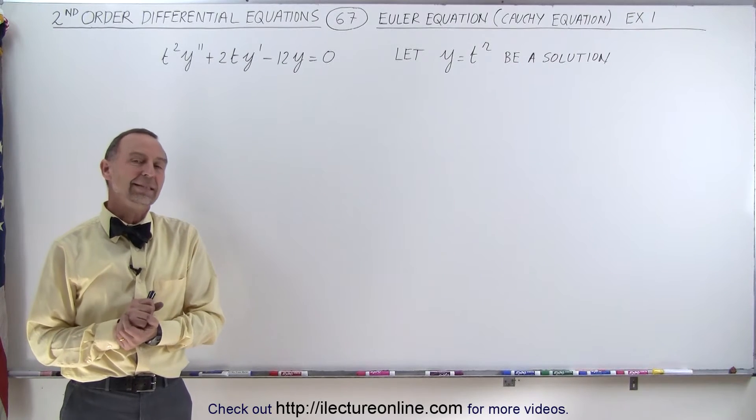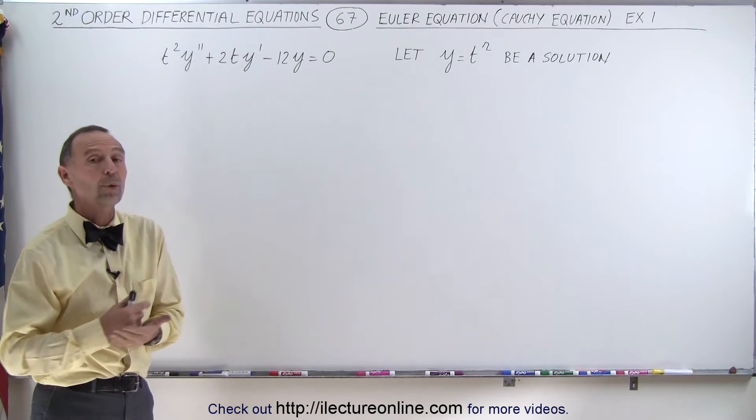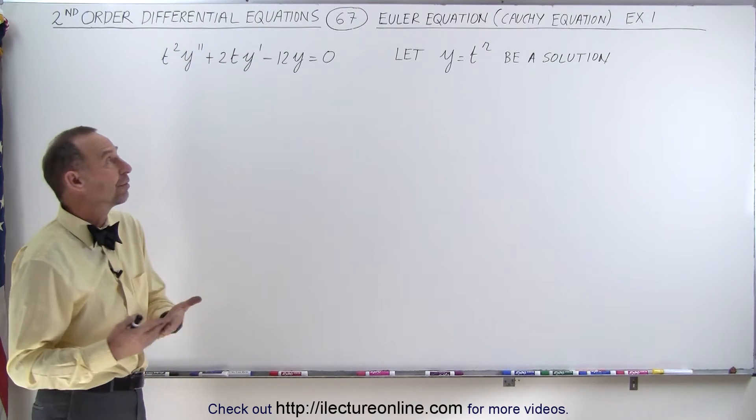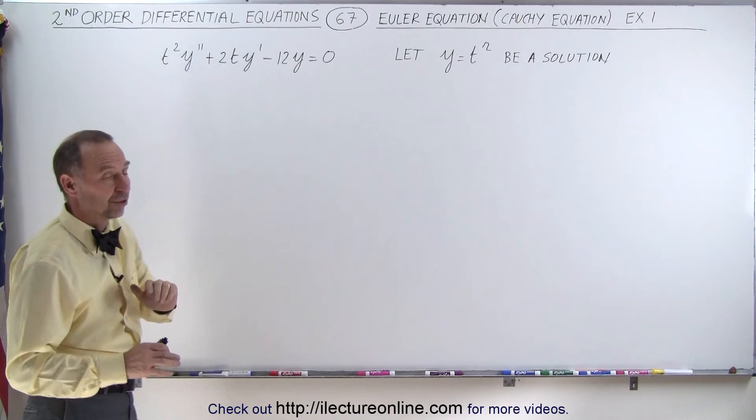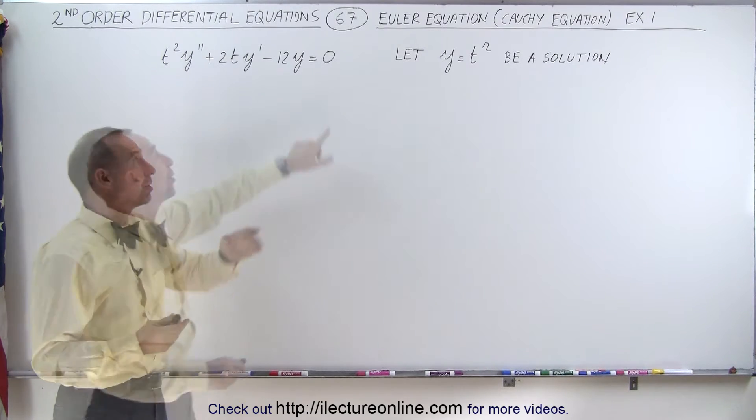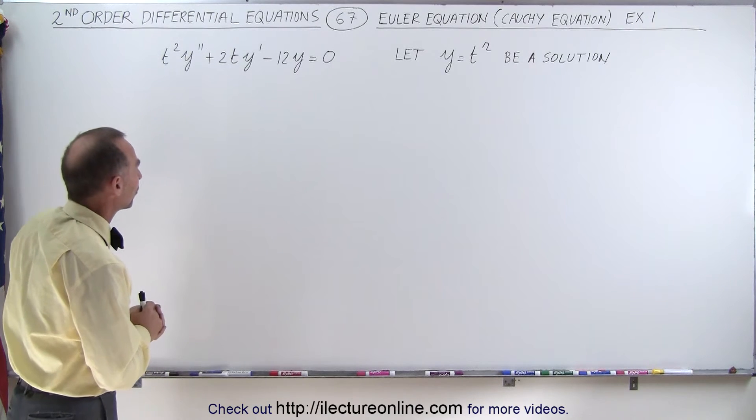Welcome to iLecture Online. Here's our first example of how to use the Euler equation method to solve second-order differential equations that do not have constant coefficients. We're simply going to start out with the homogeneous type first, so we're only finding the homogeneous solution to this equation.